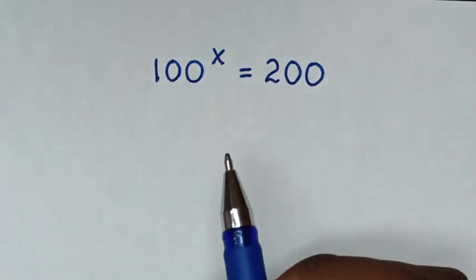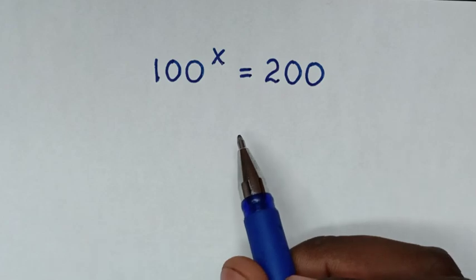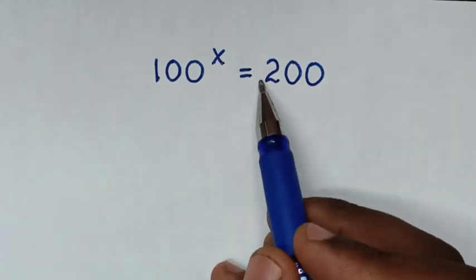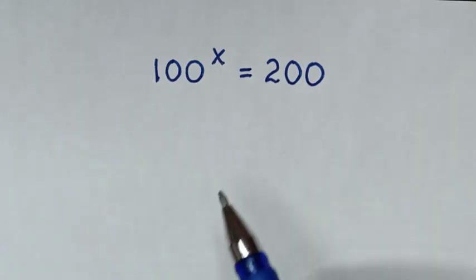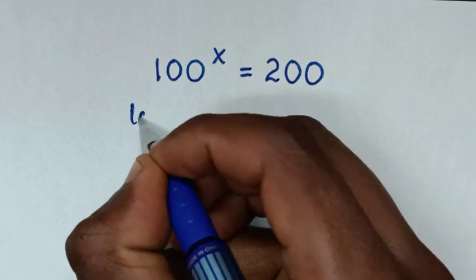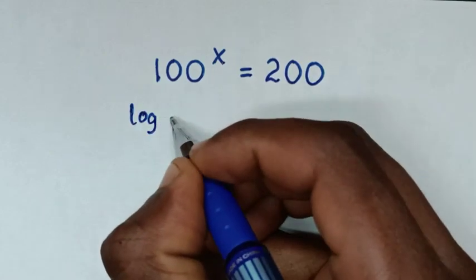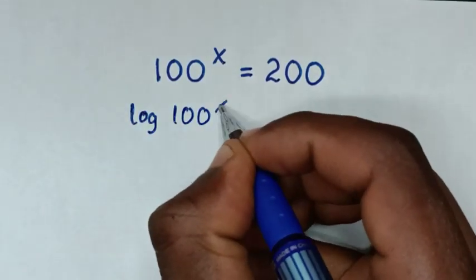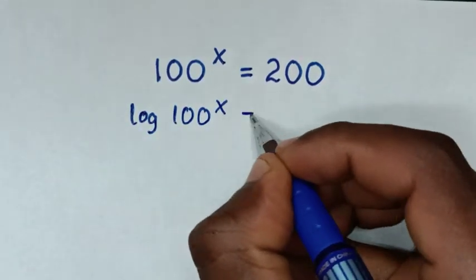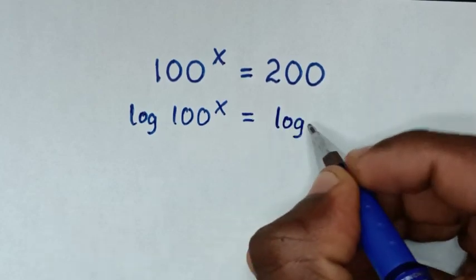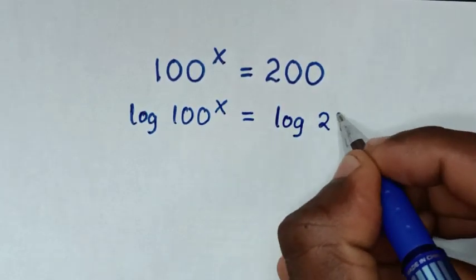So first, in the first step, we'll apply log on both sides. So it will be: log of 100 to the power of x is equal to log of 200.